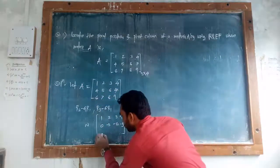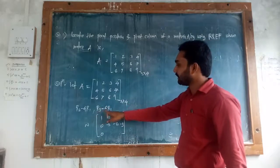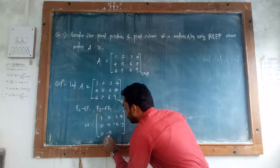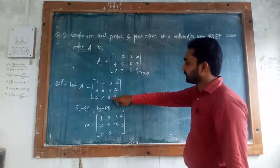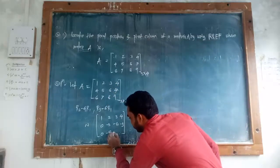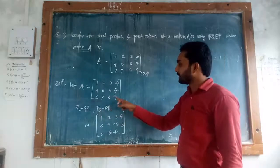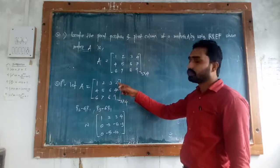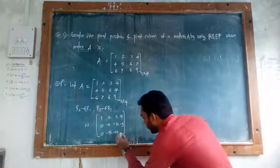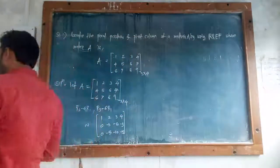Row operation R3 = R3 minus 6 times R1. So 6 minus 6 is 0. Next: 7 minus 6 into 2 is 12, so 7 minus 12 becomes minus 5. Next: 8 minus 6 into 3 is 18, so 8 minus 18 is minus 10. Then: 9 minus 6 into 4 is 24, so 9 minus 24 is minus 15. So the third row becomes 0, minus 5, minus 10, minus 15.